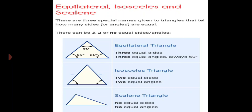The sum of angles in a triangle is always 180 degrees. An equilateral triangle has three sides and three equal angles. So, 60 plus 60 plus 60 equals 180 degrees.